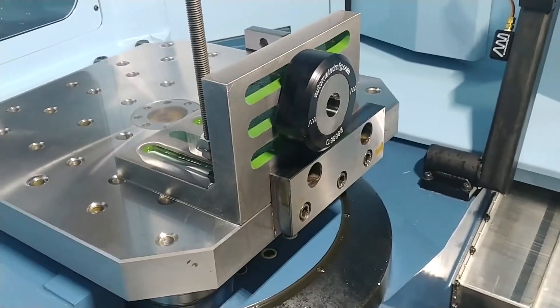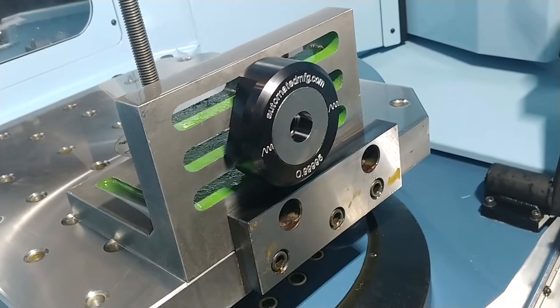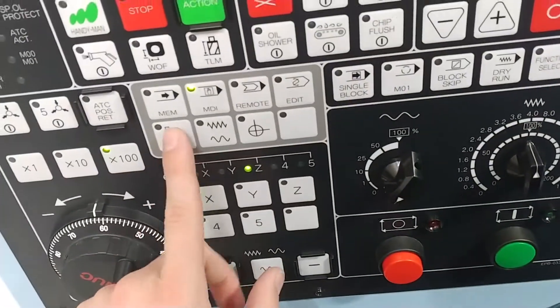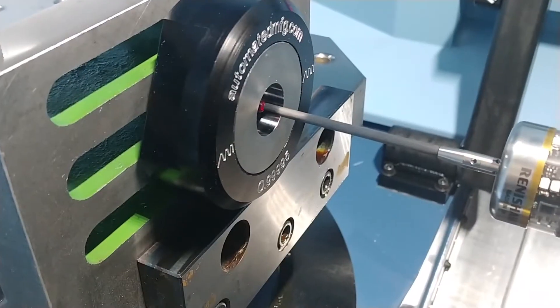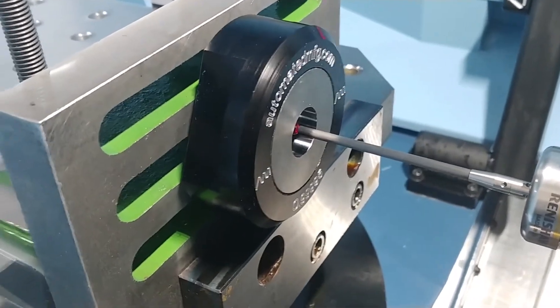If you are using a 5-axis mill, make sure all rotary axes are homed. Handle jog the probe inside the ring gauge at its approximate center.